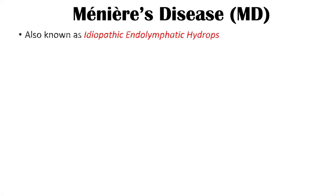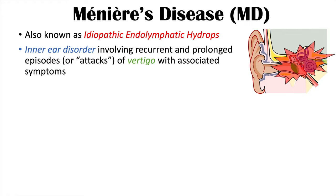Hi everyone, this lesson is on the signs and symptoms of Meniere's disease. We're going to briefly talk about what Meniere's disease is, then get into the signs and symptoms and why they occur. Meniere's disease is also known as idiopathic endolymphatic hydrops. It is an inner ear disorder involving recurrent and prolonged episodes or attacks of vertigo with associated symptoms, affecting inner ear structures like the semicircular canals and the cochlea.